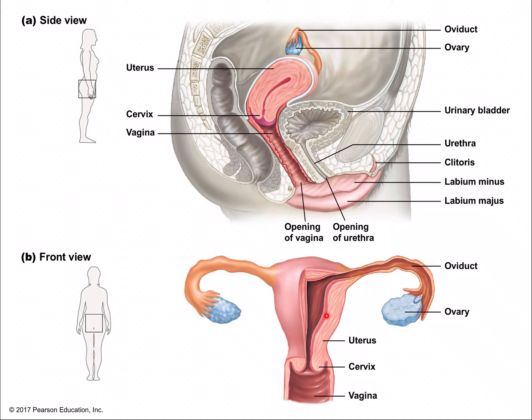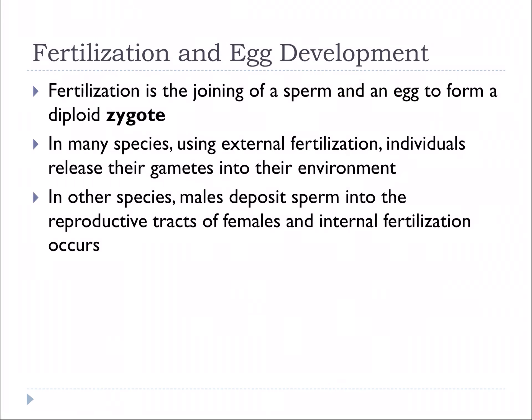There are different layers to the uterine wall: the endometrium, myometrium, and epimetrium. When egg and sperm join together in fertilization, if they are both present, it's called a zygote.